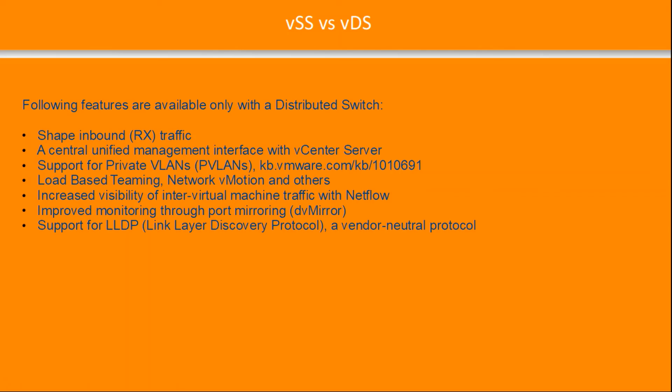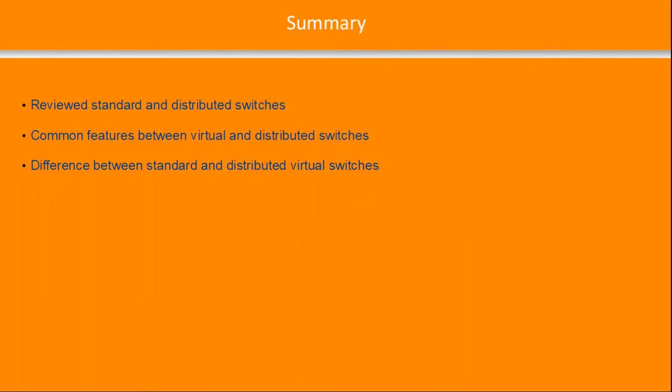However, the following features are only available with the distributed switch: shaping inbound traffic, a central and unified management interface with vCenter Server, support for private VLANs, LBT (load-based teaming), network vMotion, increased visibility of intra-virtual machine traffic with NetFlow, and improved monitoring with support for LLDP, which is a vendor-neutral protocol.